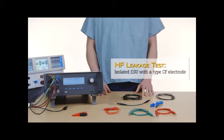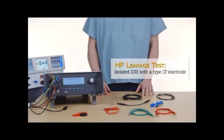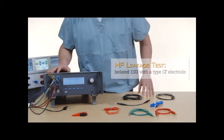Here's how to do an HF leakage test for an isolated ESU with a type CF, active to earth, electrode.